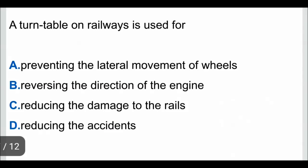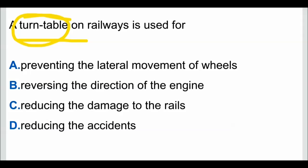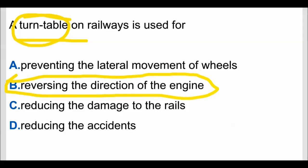Question 6: a turntable on railways is used for — a turntable is a device used for turning the railroad rolling stock, also known as a wheelhouse. It is mainly used to reverse the direction of the engine. When a train comes in from a direction and you want to reverse the engine's direction, the turntable device is used in railways. So the correct answer is option B: reversing the direction of the engine.